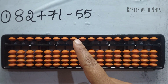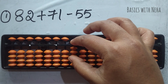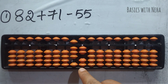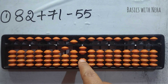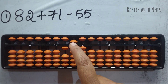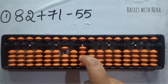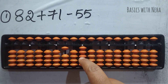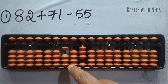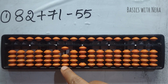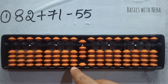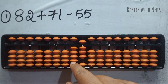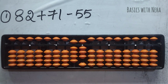First sum: 82 plus 71 minus 55. Take 82. Now add 71 — to add 7, the beads are not available, so use the big friends formula: plus 10 minus 3, and 1 you can add directly. Now minus 55 — minus 5 directly, and for the tens minus 5 the beads are not available, so you have to do minus 10 plus 5. To minus 10, the beads are not available, so jump this rod and do minus 10 on the next rod, then come back and add 5. Since you have jumped this rod and there is nothing, you add everything in the jumped rod. The final answer is 98.